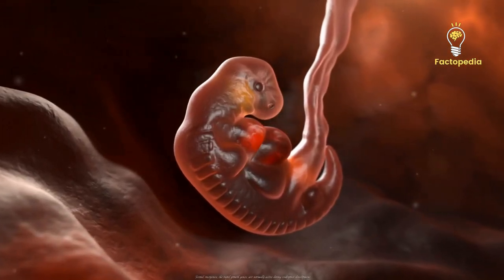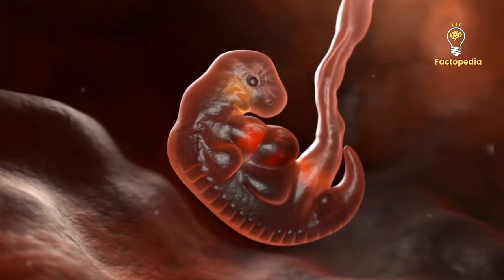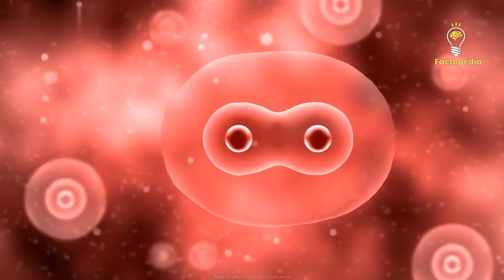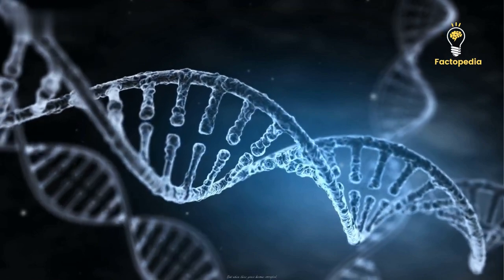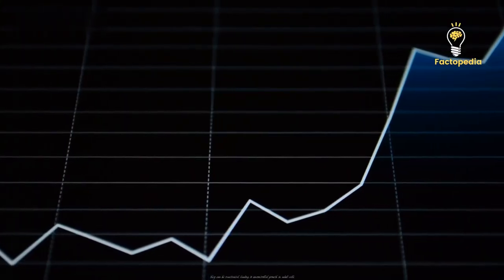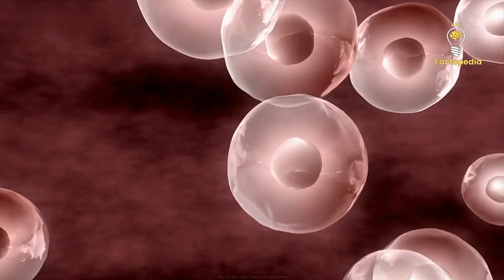Second, oncogenes, the rapid growth genes, are normally active during embryonic development. They fuel the explosive cell division required for your formation. But when these genes become corrupted, they can be reactivated, leading to uncontrolled growth in adult cells.